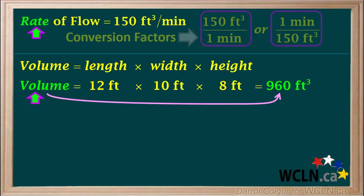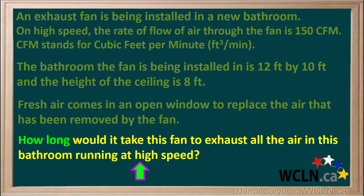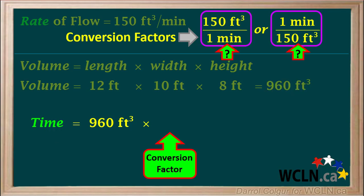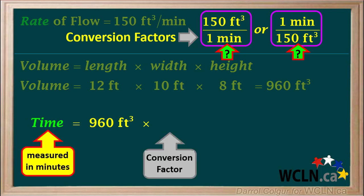Now we know the volume and the rate of flow of air through the fan. The question asks how long it will take to exhaust all the air in the room when the fan is running at 150 cubic feet per minute. To calculate the time, we take the volume of 960 feet cubed and multiply it by a conversion factor based on the rate. But which one should we use? Time can be measured in minutes, so if our answer is in minutes, the units will work out correctly — we need the unit minutes on top of our answer.